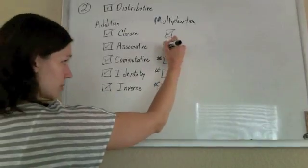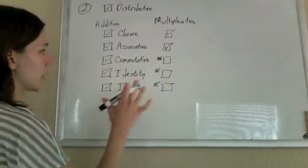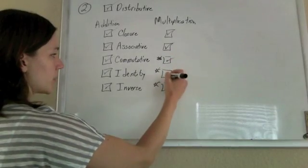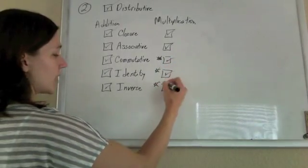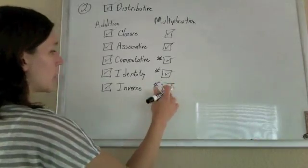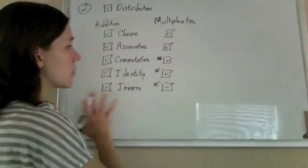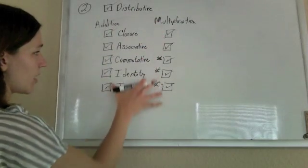They are totally associative, nothing funky there, nothing funky with commutative. They have an identity of one and an inverse of one over the number. So rational numbers, not a problem. They satisfy all of these.